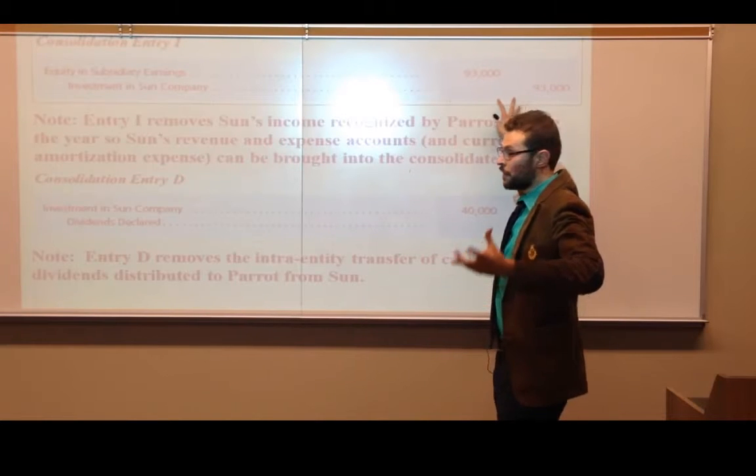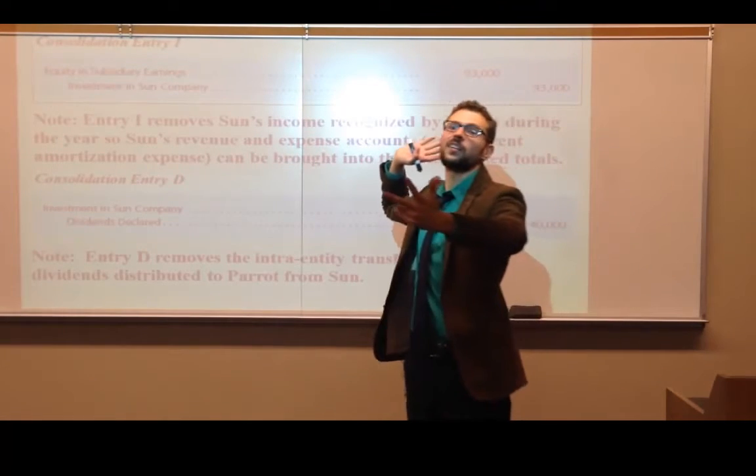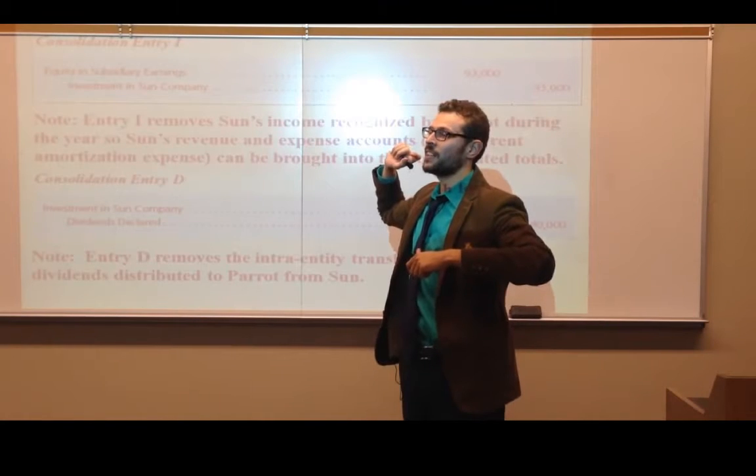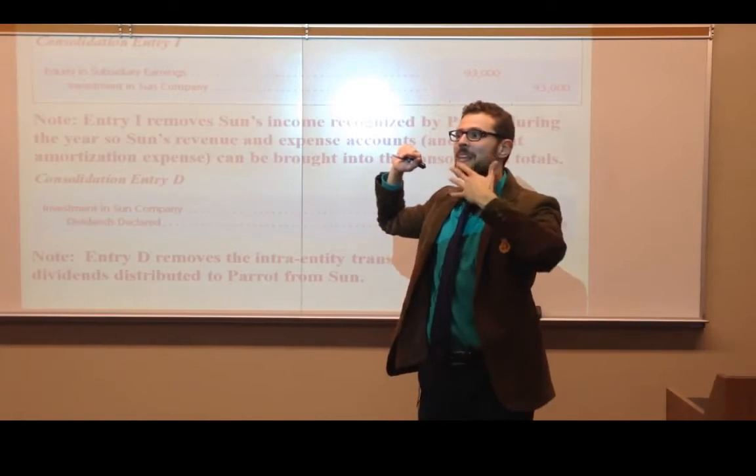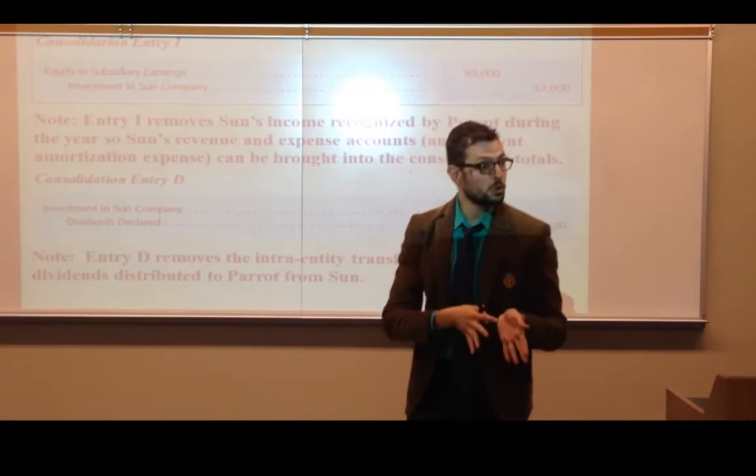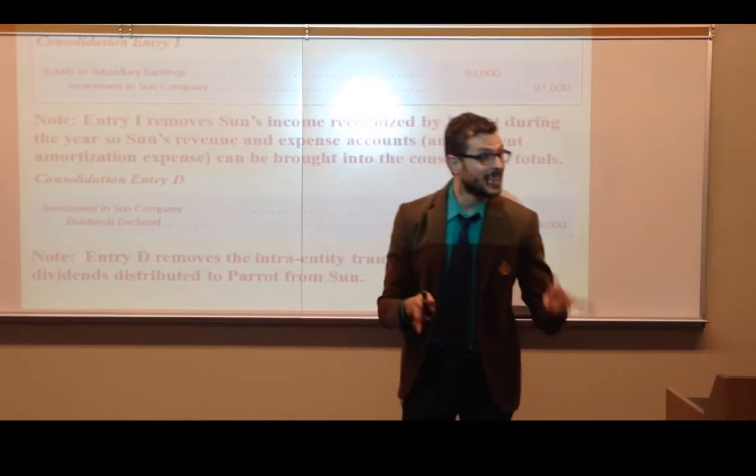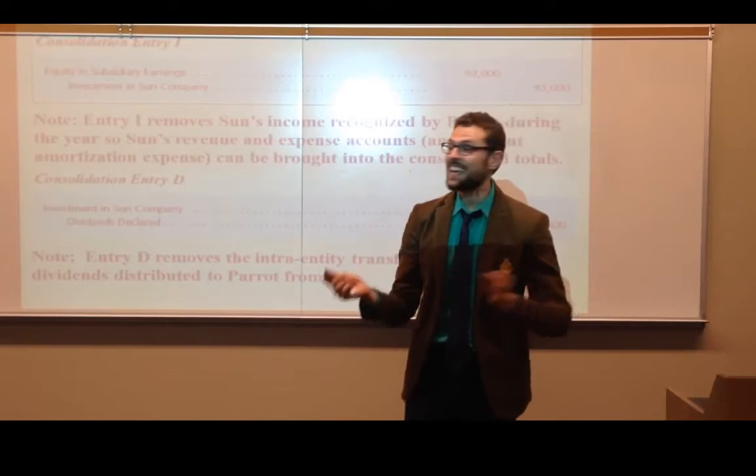If I just eliminate $600,000 and $200,000 out of the investment account, it's not going to eliminate everything. Remember, I've got to get to zero. So how do I eliminate the income that was accrued this year?